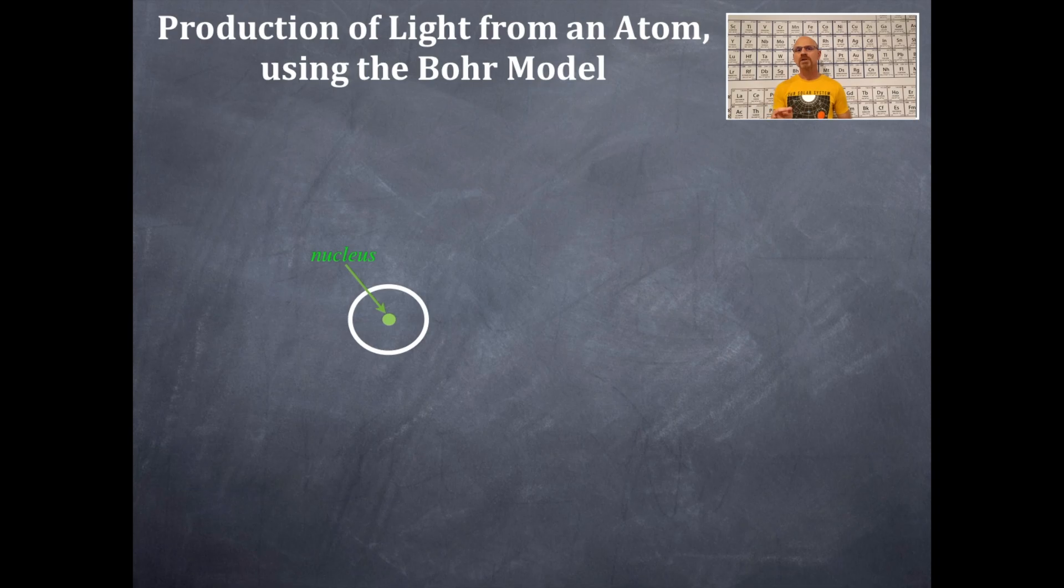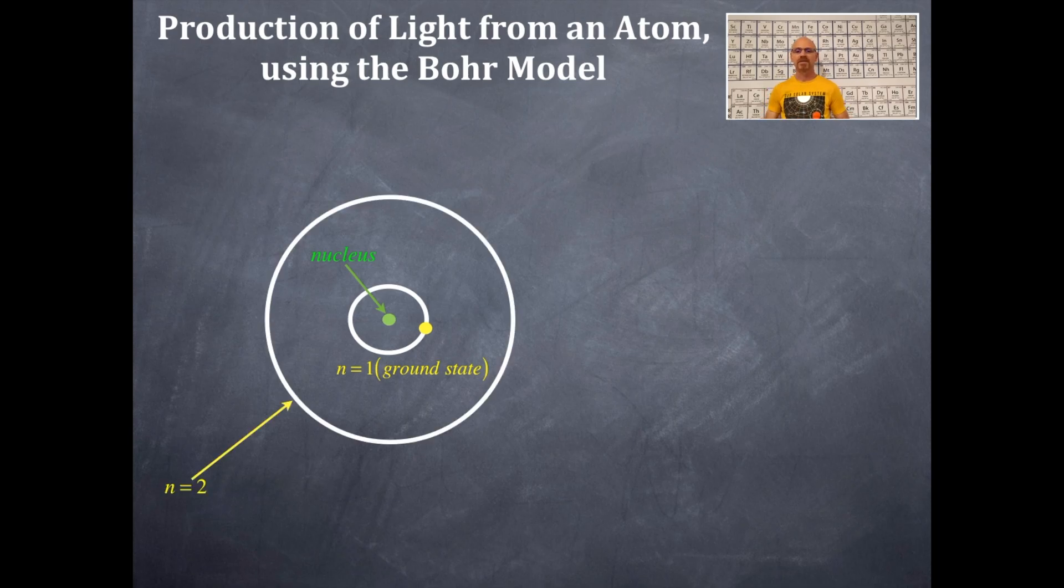And around the nucleus is an orbital. So, this orbital is in n equals 1 and that is called the ground state. Just kind of like the ground floor of a building. That's the low level, the ground floor at the bottom. No basements here.